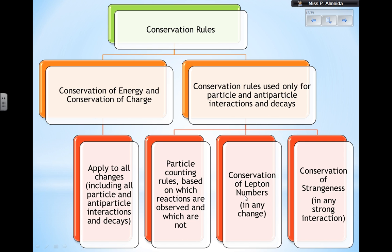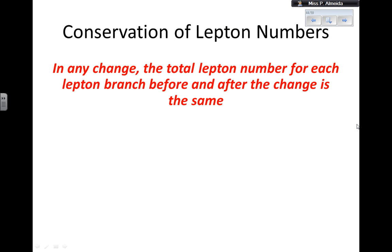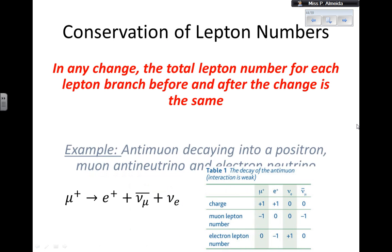I have the conservation of lepton number that must happen in any change — go on the videos on lepton for this. And conservation of strangeness number that must happen in any strong interaction, not necessarily in a weak interaction. Go on the previous video on quarks and antiquarks to know about this conservation of strangeness. So, let's go to the conservation of lepton number. We did say some videos ago that in any change, the total lepton number for each lepton branch, before and after the change, needs to be the same. Whichever number I get before the interaction must be the same as the number after the interaction.